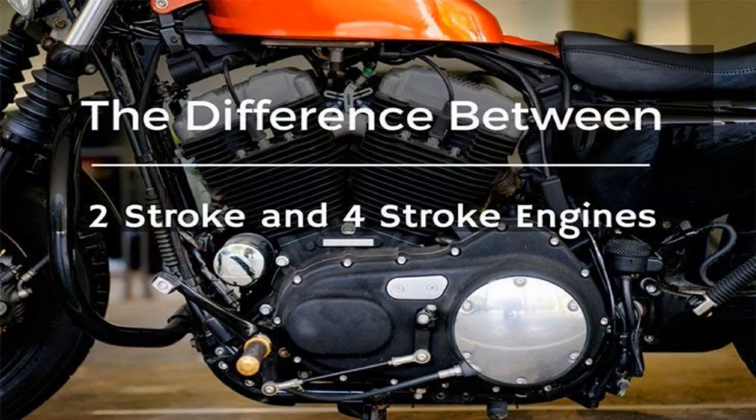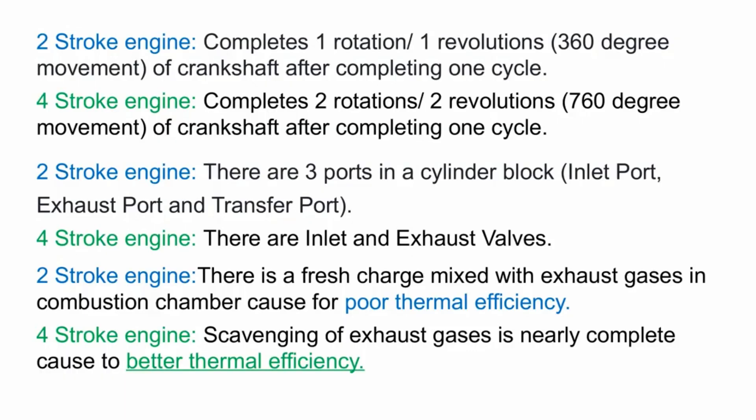Now let's talk about the differences between two-stroke and four-stroke engines. In a two-stroke engine, the crankshaft completes one rotation per cycle. In a four-stroke engine, the crankshaft completes two rotations per cycle.